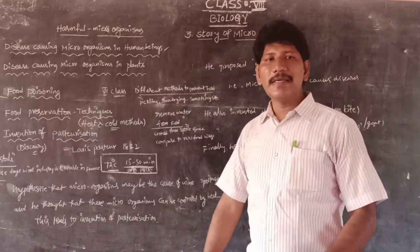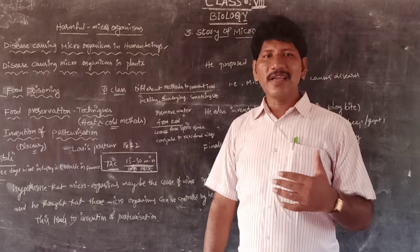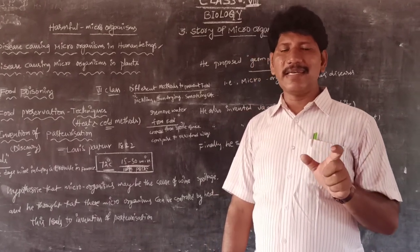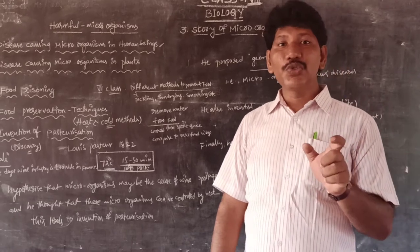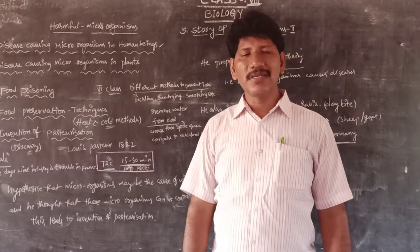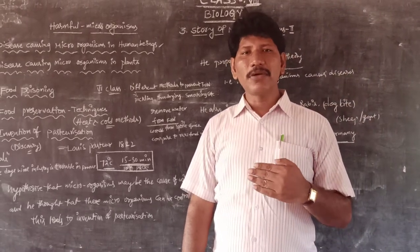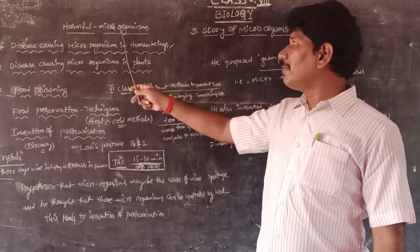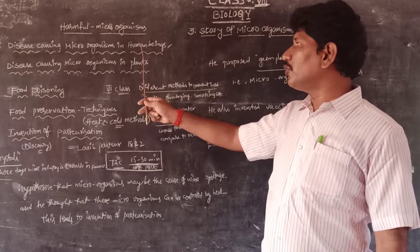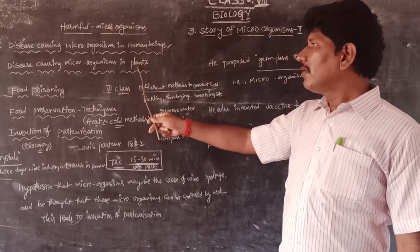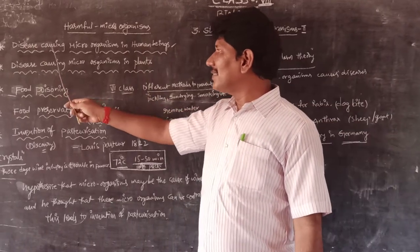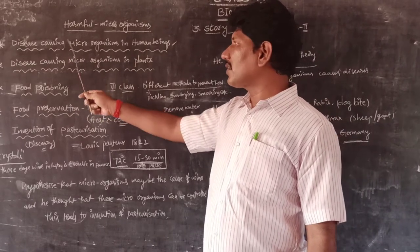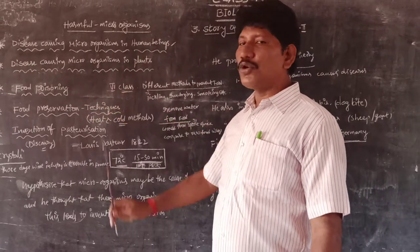Part 2 covers mainly two phases: the first one is useful microorganisms, and the second one is harmful microorganisms. Apart from that, harmful effects of microorganisms especially in human beings and plants. Coming to the disease-causing microorganisms in human beings.